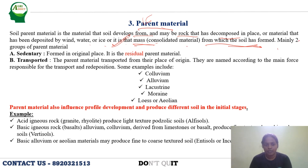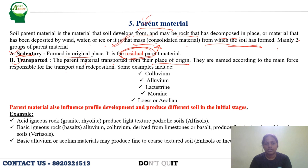There are two main groups of parent material: sedentary and transported. Sedentary parent material is formed in the original place — also called residual parent material. Transported parent material is moved from the place of origin and named according to the main force responsible for transport and redeposition. Examples include colluvium, alluvium, lacustrine deposits, moraine (till), and loess.